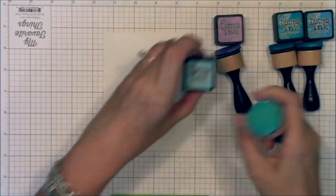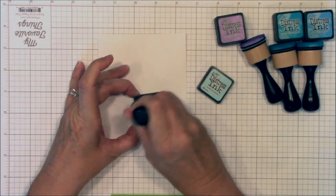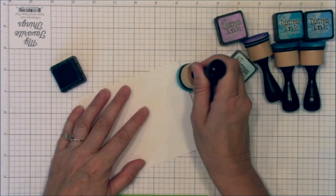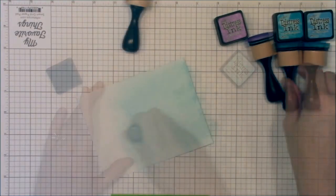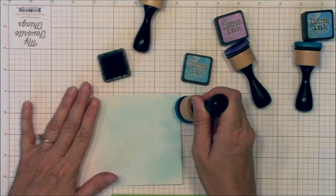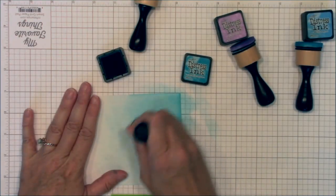This spinner shaker card features the brilliant Mermazing stamp set and the coordinating dies as well as my circle stacks dies to create both the shaker and the spinner track. It's a super fun way to create a combo spinner shaker card and opens the door for lots of other spinner shaker card ideas.